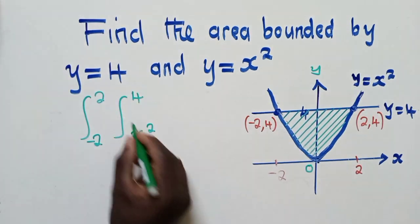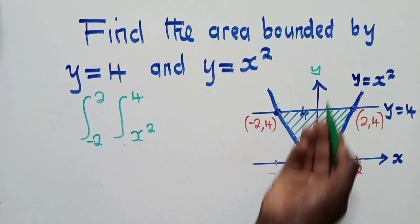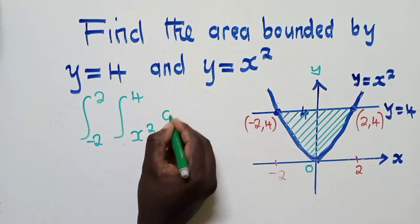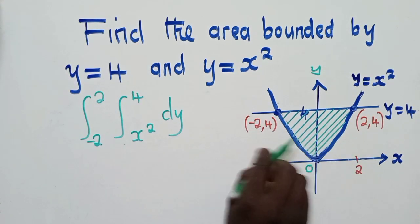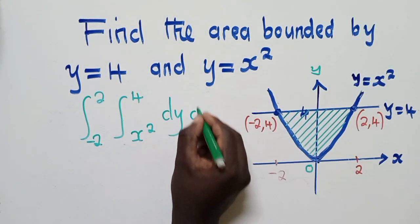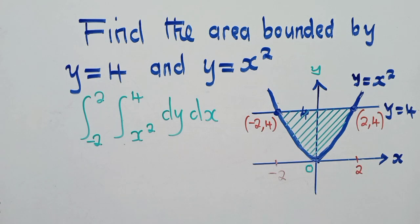So this, we got these limits when we are going along the y-axis. So we are going to say d y. While this, it was when we are going along the x-axis. We are going to say dx. So this is how you put up the limits.